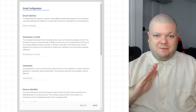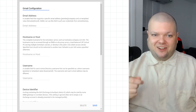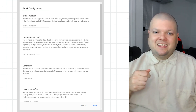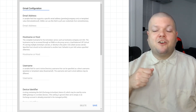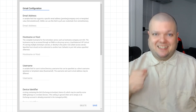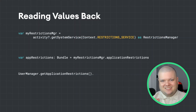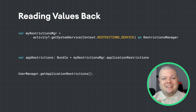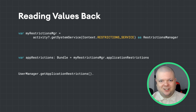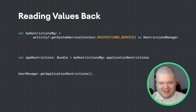Once an IT admin creates a set of values for these configurations, they can create a policy and send it to their managed devices. To read values sent to your app, get the restrictions manager object, which you can get by calling get system service on the activity. Once you have a restrictions manager, you can get the current configuration setting by calling its get application restrictions method.